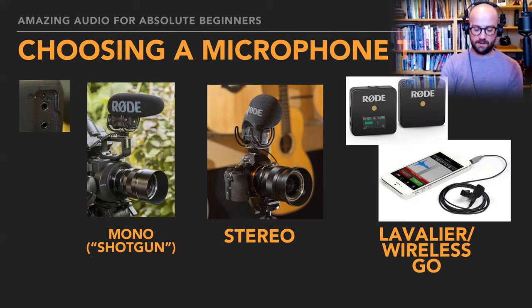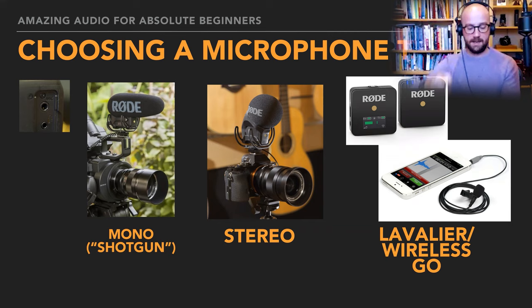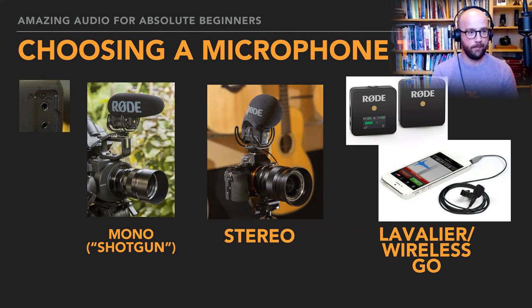Many people have been purchasing the Wireless Go. It's a digital system — the receiver goes on your camera, the transmitter clips to the person, and just like the SmartLav, the other person can walk off and the audio is being beamed to your camera. I would rather use a £45 lavalier than our NTG4 at £450 if the person was on the other side of the room — closeness is the key factor.